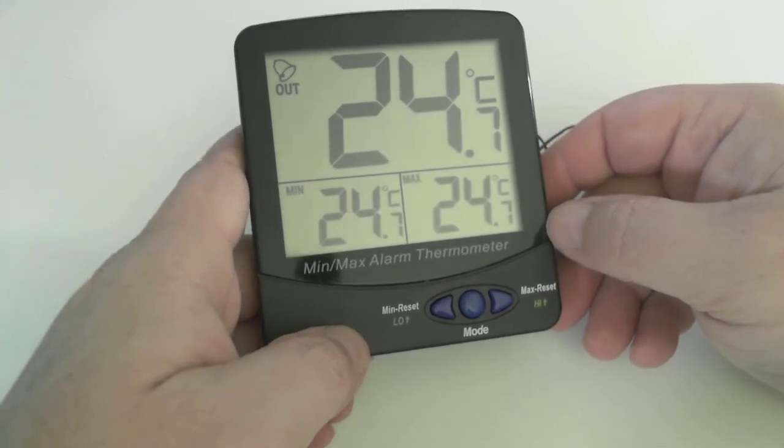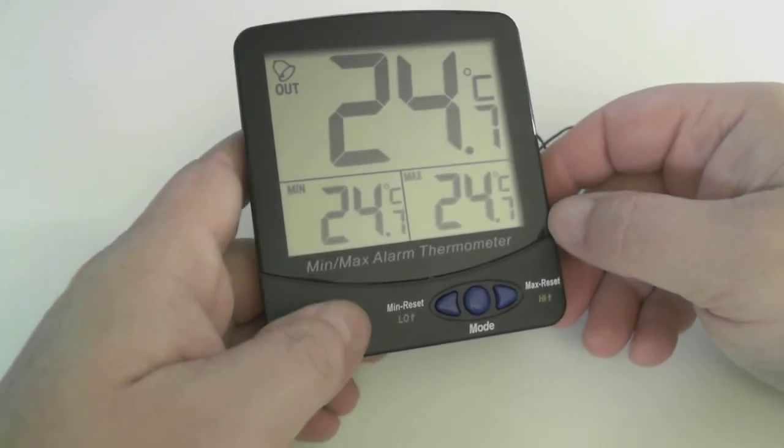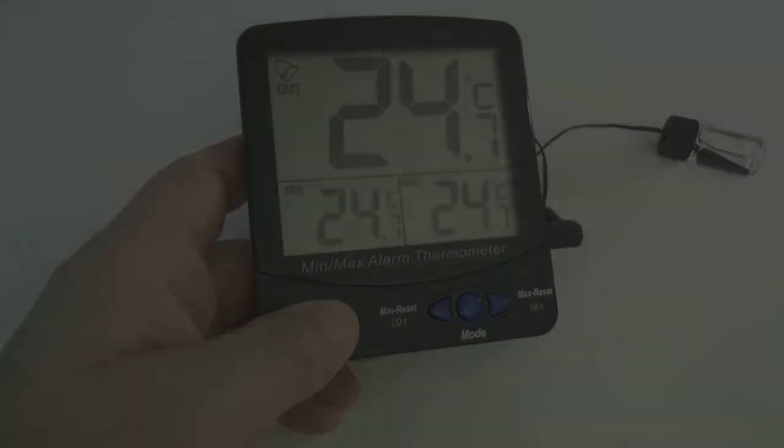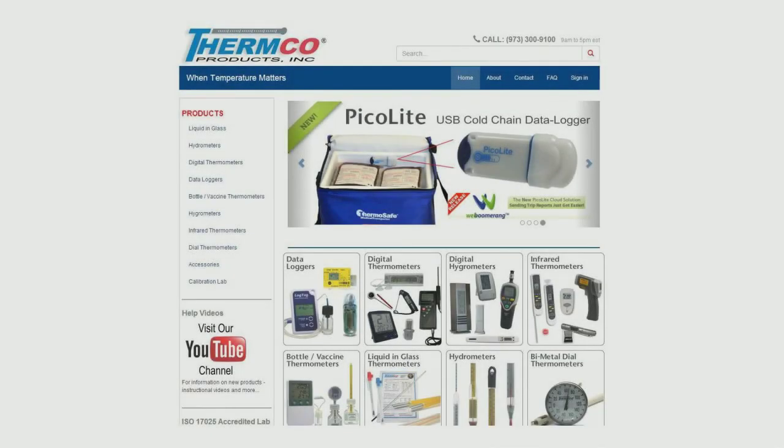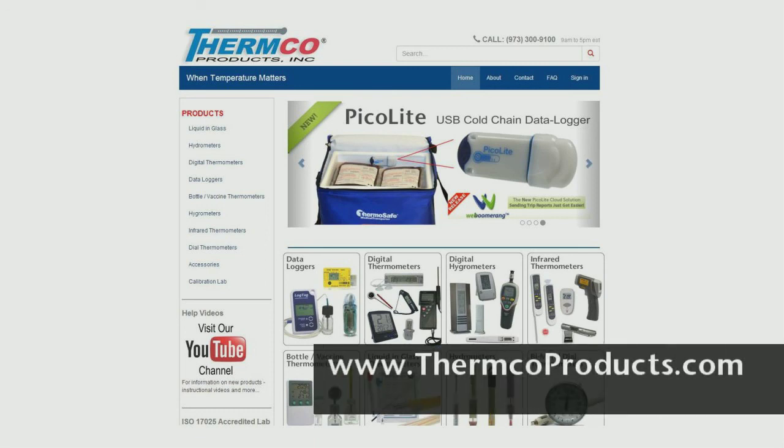That's the end of our instruction video for the ACC 895. For additional product information or information on any other products that Thermco has, please visit our website at www.thermcoproducts.com or call us at 973-300-9100. Thank you.